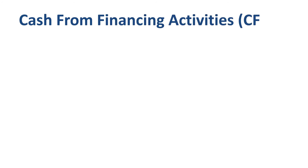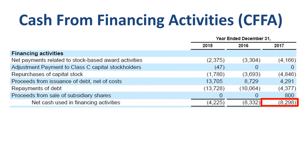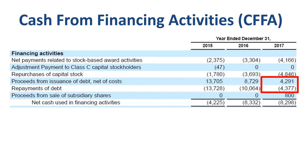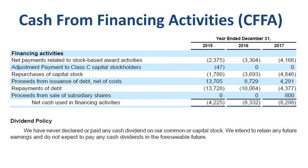Cash from financing activities: $8.3 billion net cash outflow. Repurchases of stock explain $4.8 billion of this, and stock-based award activities account for $4.2 billion. The line items related to debt are each significant amounts, but if you net the proceeds and repayments together, it's a net cash outflow of less than $100 million. Alphabet's annual report notes on dividend policy state they have never declared or paid any cash dividend and do not expect to pay any in the foreseeable future. This is unusual for a company of Alphabet's size, but not unusual for tech companies — they prefer to retain earnings and invest in current businesses as well as other bets.